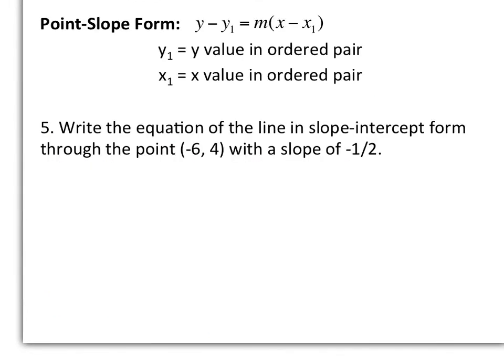Point-slope form is a formula that can be used to write a linear equation when you are given a point and the slope. The formula is y minus y1 equals m times x minus x1. So remember, m is your slope, y1 is the y value in the ordered pair, and x1 is the x value in the ordered pair.